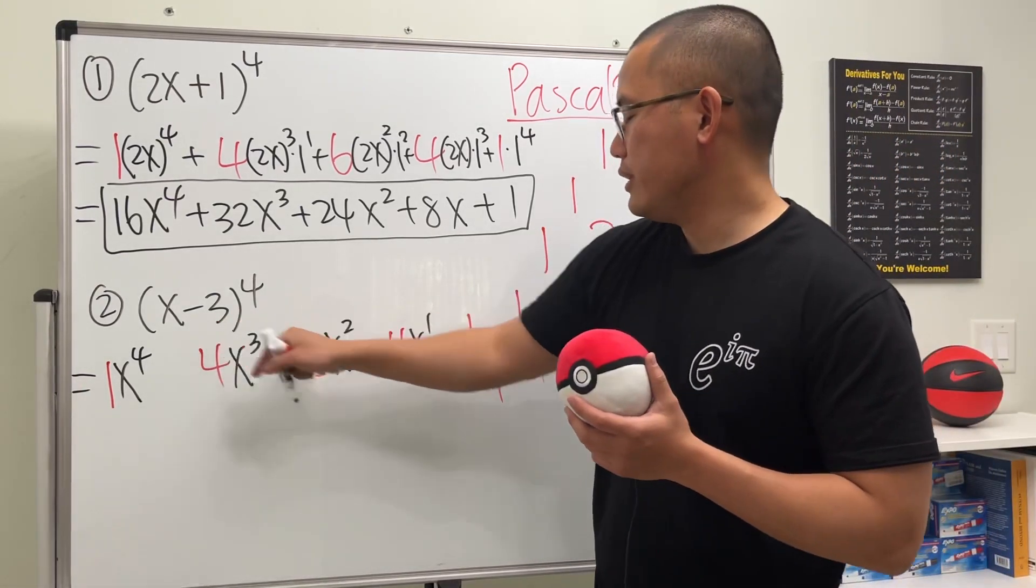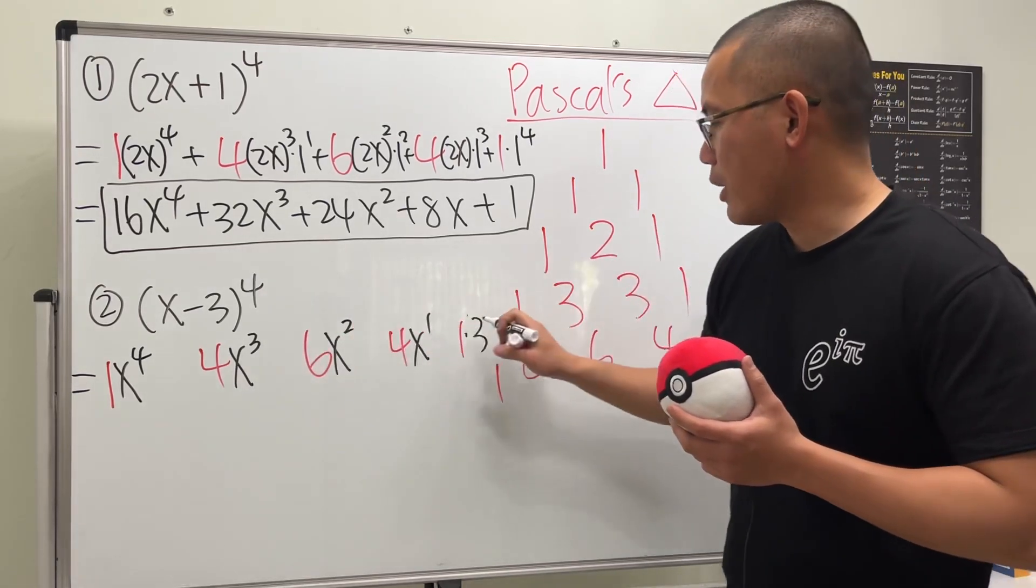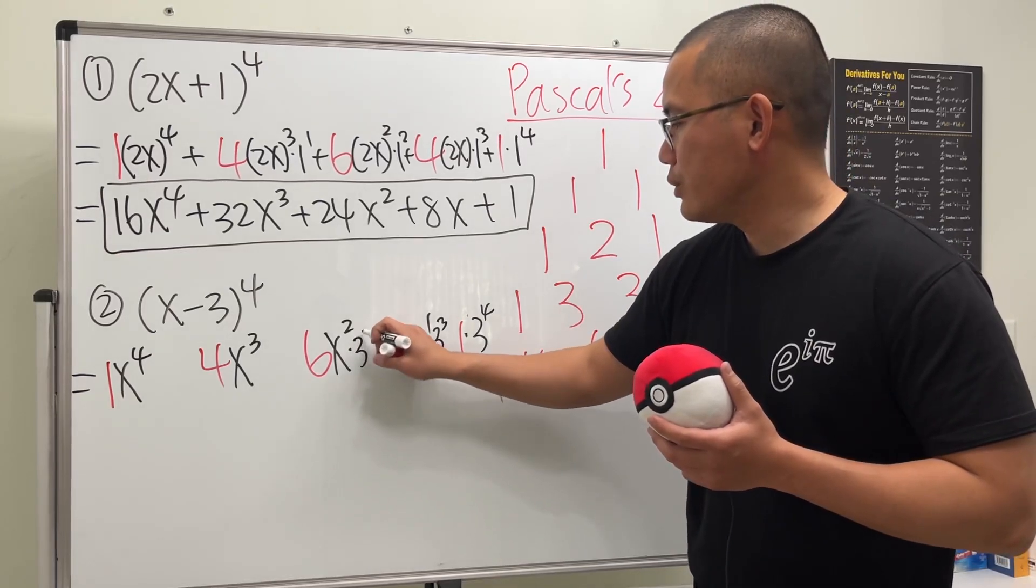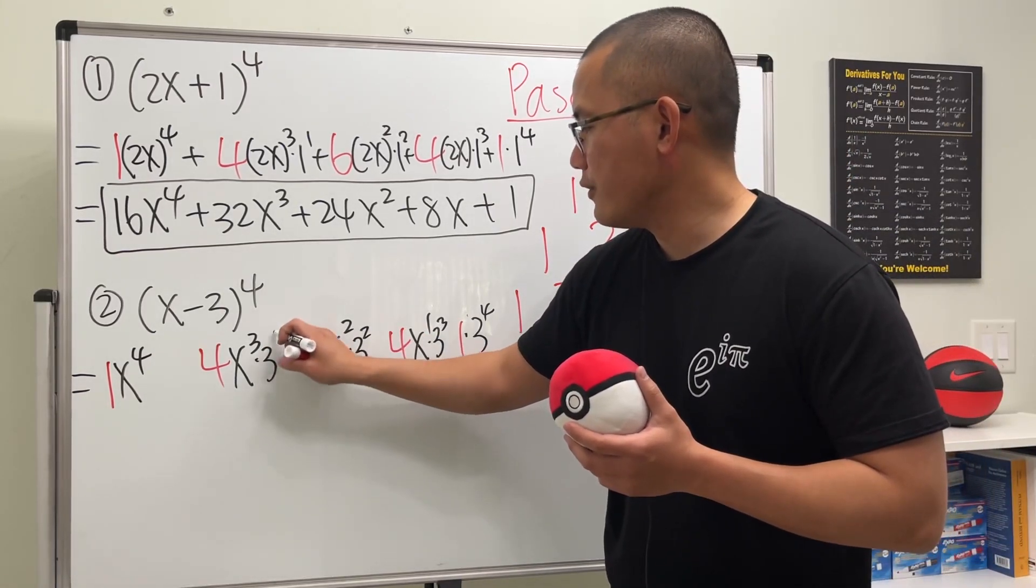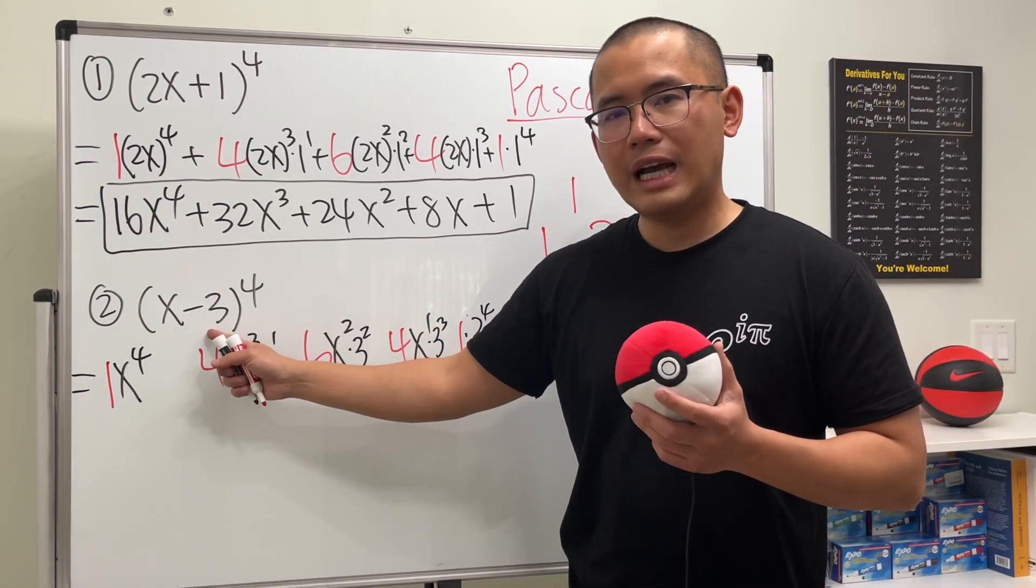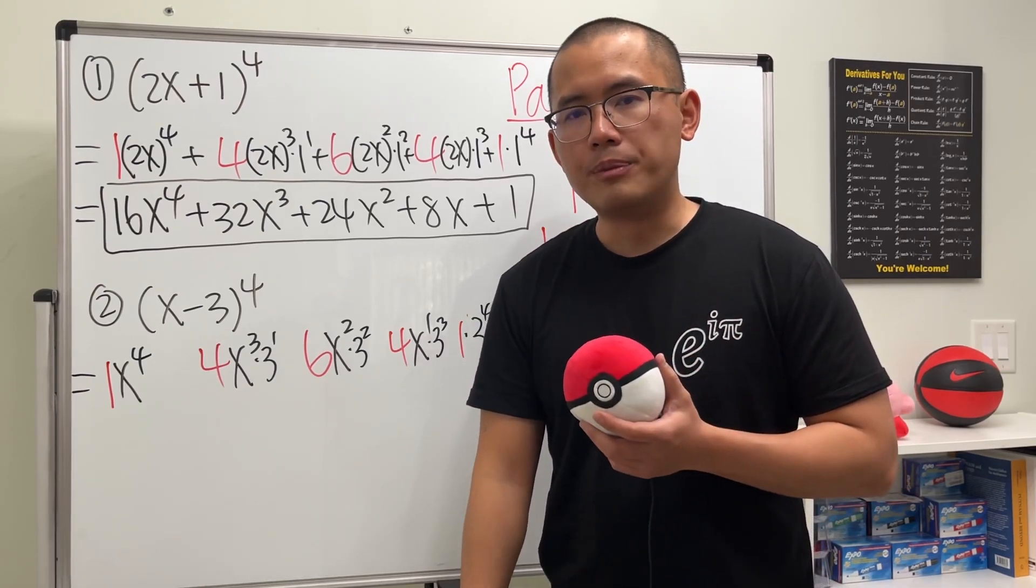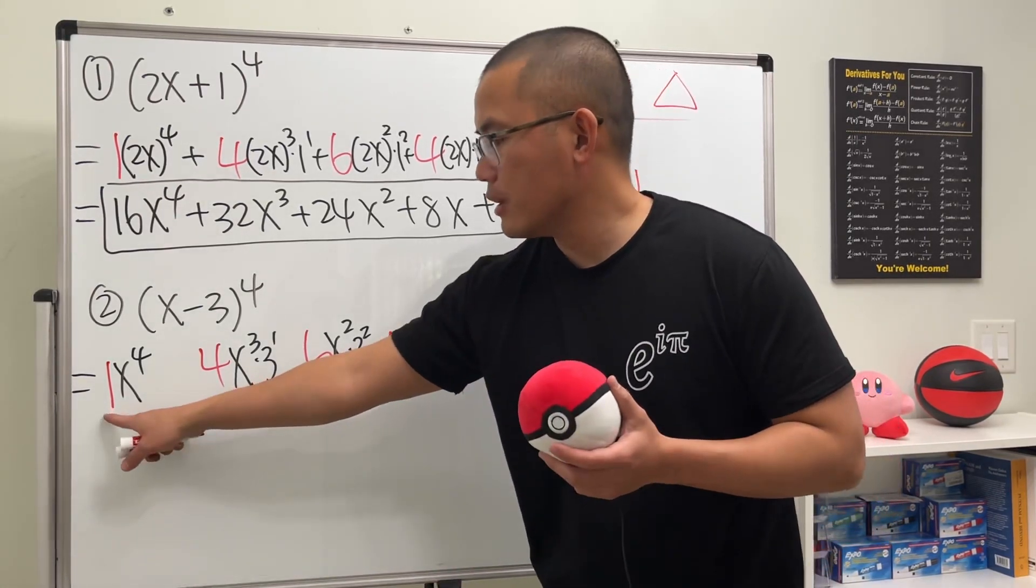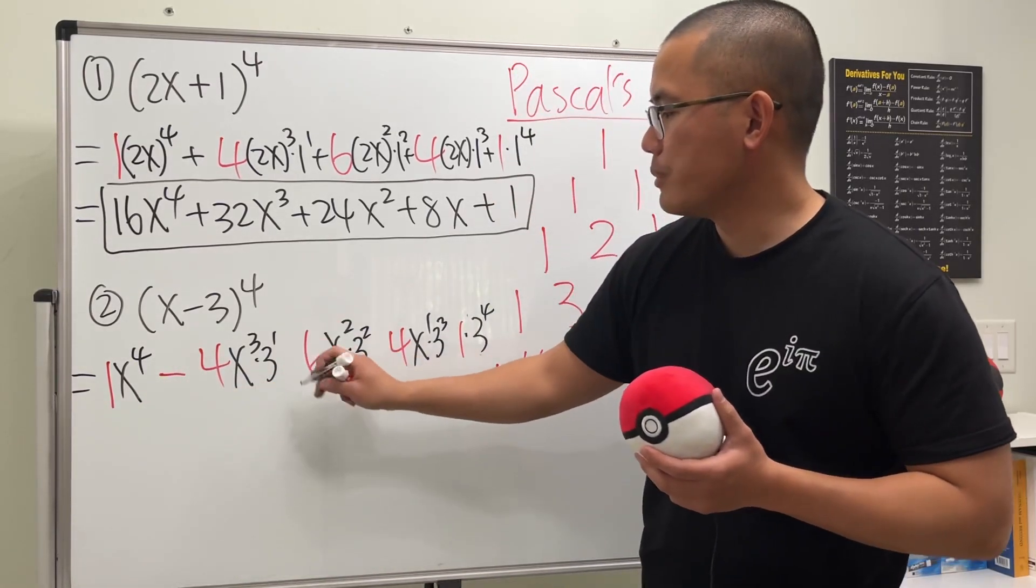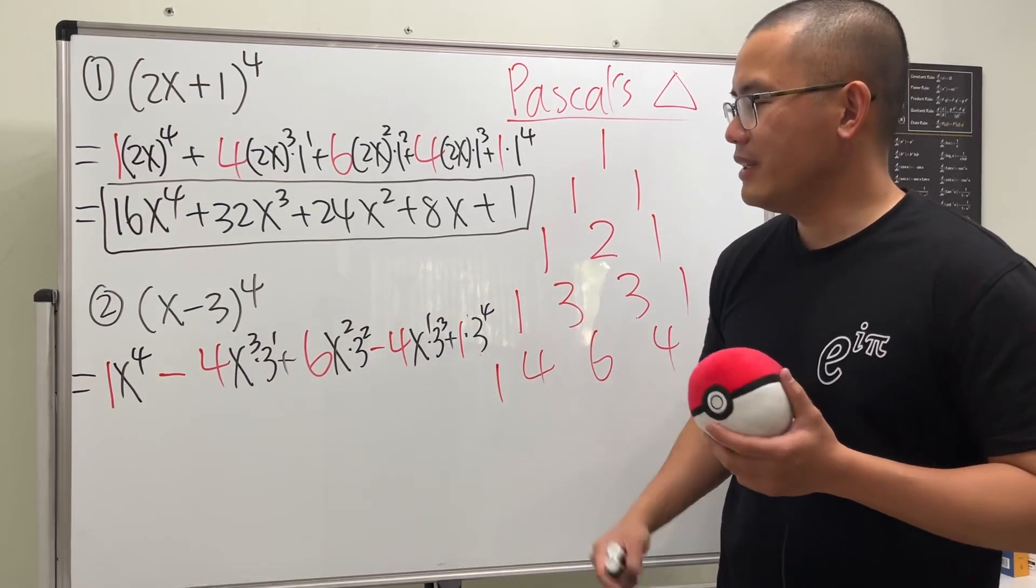And then here we have 3. I'm just going to put it down here. We multiply by 3 to the fourth power. And then 3 to the third power. 3 to the second power. And then 3 to the first power. And then this one, no 3. Well, this case we have a subtraction. So what do we do with the sign? The easiest way to remember it is the alternates. That's all you have to do. First term is positive. The next term will be minus. And then the next term will be plus. And then minus, plus. Like that. It alternates.